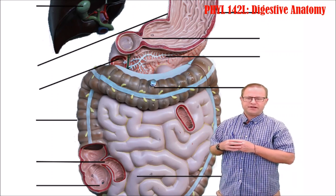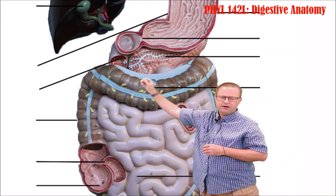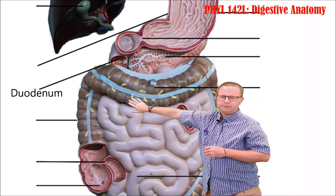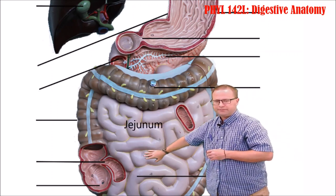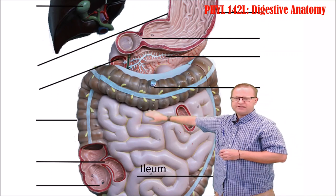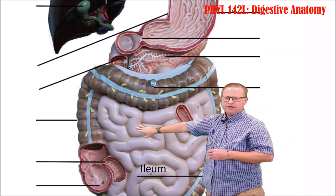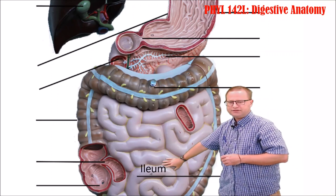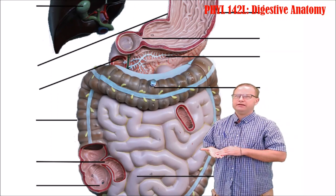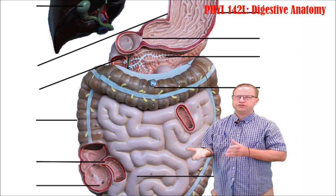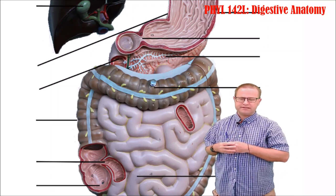Now let's look at the rest of the small intestine. The first loop is the duodenum, which leads into the jejunum and eventually the ileum. The duodenum is recognizable because it's at the top and only a few inches long. Just remember: duodenum, jejunum, ileum — like Dow Jones Industrials. Those three are the three parts of the small intestine.